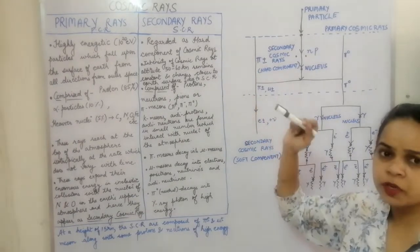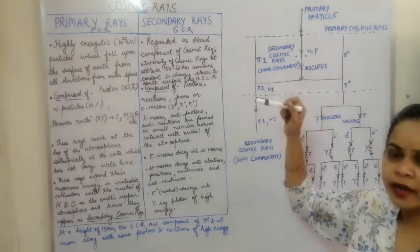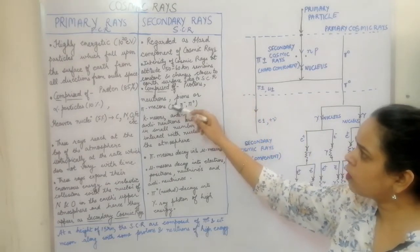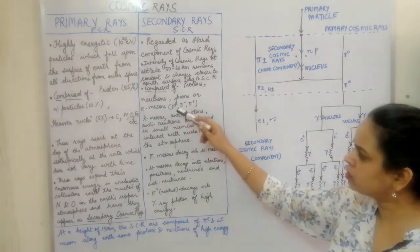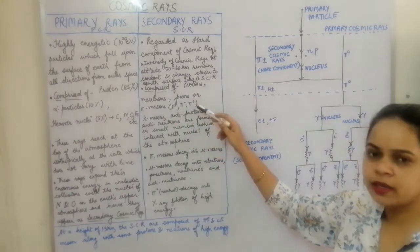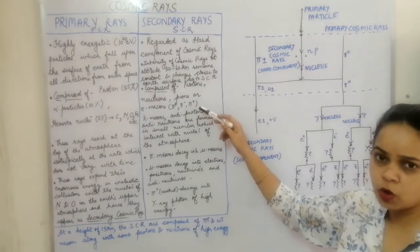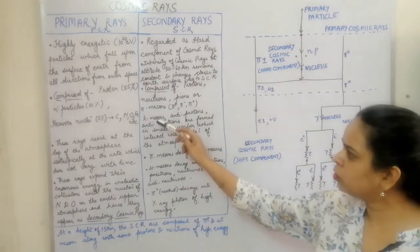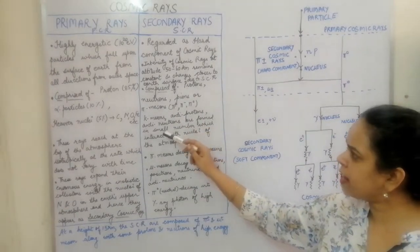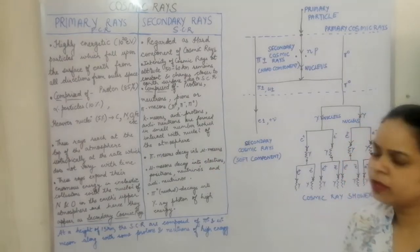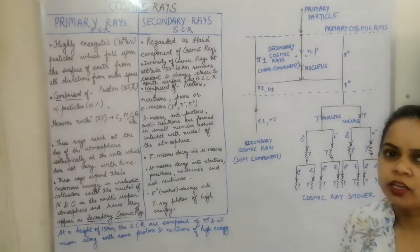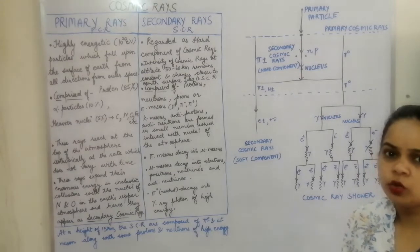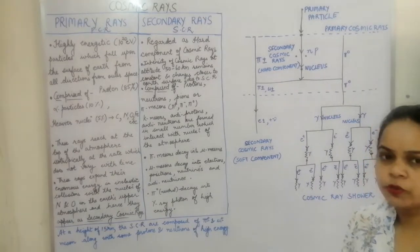The secondary cosmic rays are comprised of protons, neutrons, pions, and pi mesons — that is pi-plus, pi-minus, and pi-naught. There are three types of pi mesons. They also consist of K mesons, antiprotons, and antineutrons, although these antiprotons and antineutrons are formed in small numbers and interact with the nuclei of the atmosphere.